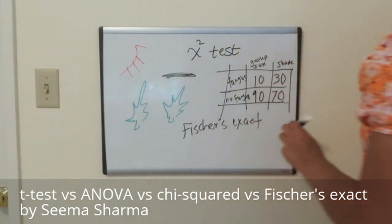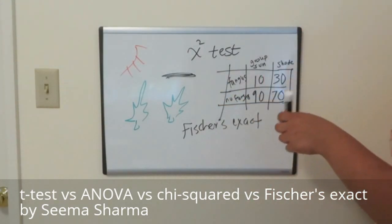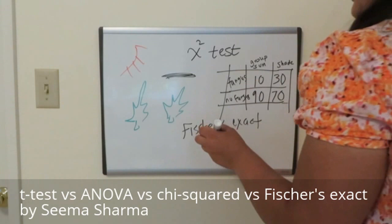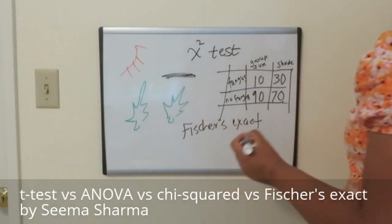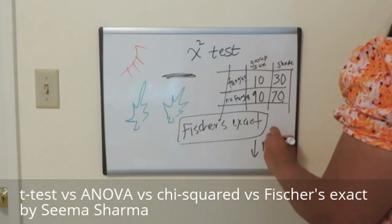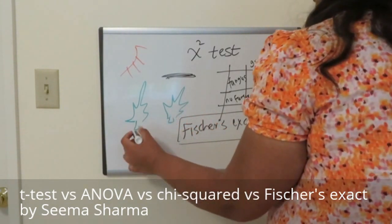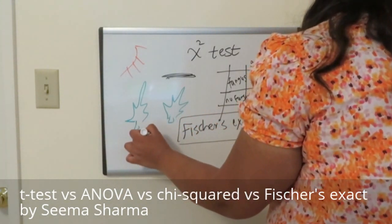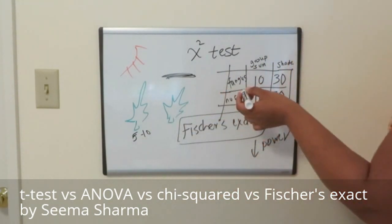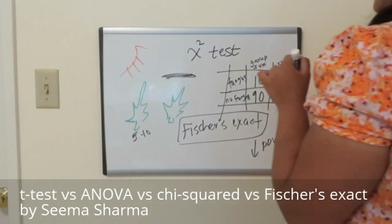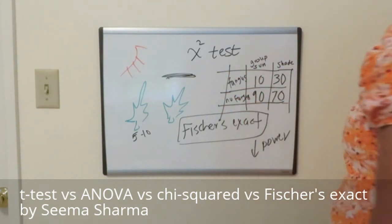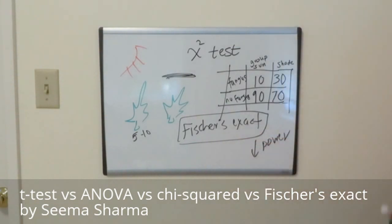Fisher's exact test is used in the same kind of situations as the chi-square test — when you are using occurrences, or how many times an event happened, measured in two different groups. The difference is that it's used in studies where there's low power. For example, if we only had groups of five or ten leaves per category, like five sun-exposed and five shade-exposed, and we were looking for the number of fungally infected or non-fungally infected leaves, then we would use Fisher's exact test.